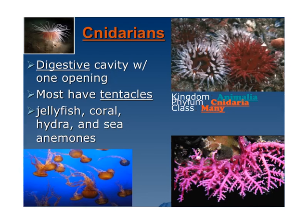The cnidarians are the stinging-cell animals. They have a digestive cavity with one opening — you can see the one opening right here. Most have tentacles. Some examples are jellyfish, coral, hydra, and sea anemone. They're in the kingdom animalia and in the phylum cnidaria. The way I remember it is — see how these have the eyes here? I think of those as the stinging tentacles coming off.